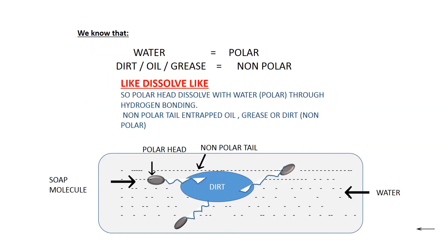As we know that water is polar in nature, whereas dirt, oil, and grease are non-polar in nature. According to the phenomenon of like dissolve like, polar substances dissolve in polar substances and non-polar substances dissolve in non-polar substances. So according to this phenomenon, the polar head of the soap dissolves with water that is polar in nature through hydrogen bonding, whereas the non-polar tail entraps oil, grease, and dirt that are non-polar in nature.